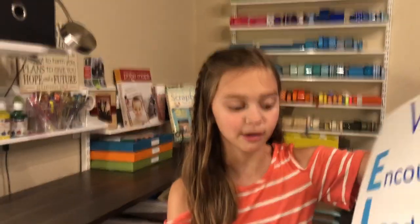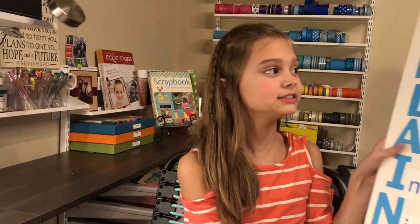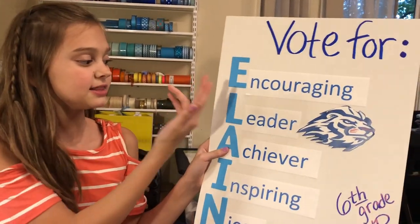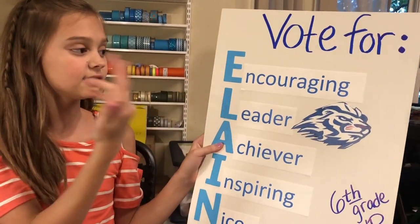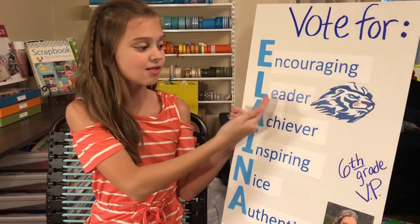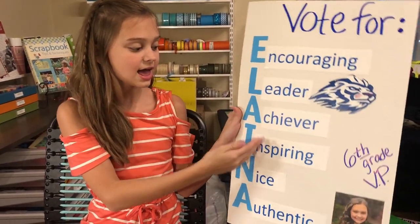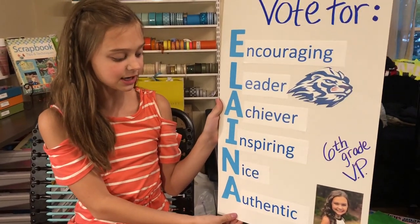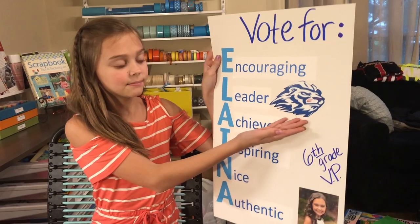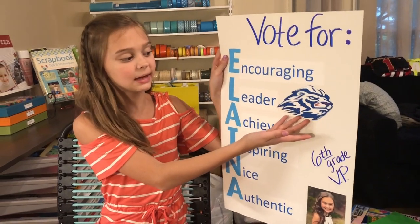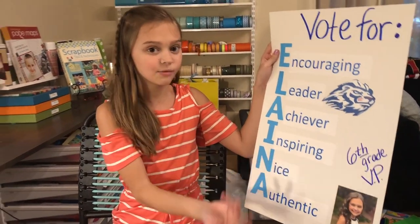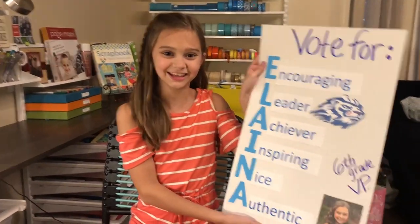The second poster is an acrostic, and it says 'vote for this.' The acrostic is the letter and then what a word can mean. So like E — encouraging, L — leader, A — achiever, I — inspiring, N — nice, and A — authentic. It also has a picture of my school mascot, which is a lion, and then 6th grade VP, which is what I'm running for, and then a picture of me.